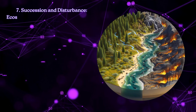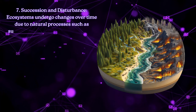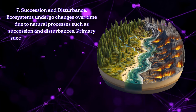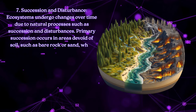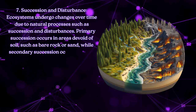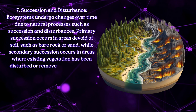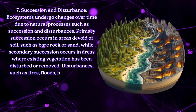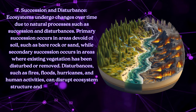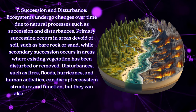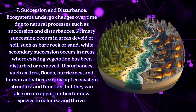Succession and disturbance: Ecosystems undergo changes over time due to natural processes such as succession and disturbances. Primary succession occurs in areas devoid of soil, such as bare rock or sand, while secondary succession occurs in areas where existing vegetation has been disturbed or removed. Disturbances, such as fires, floods, hurricanes, and human activities, can disrupt ecosystem structure and function, but they can also create opportunities for new species to colonize and thrive.